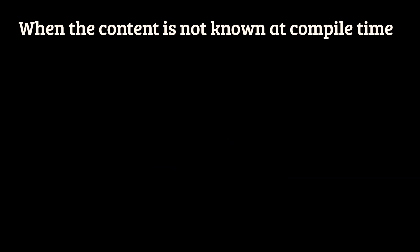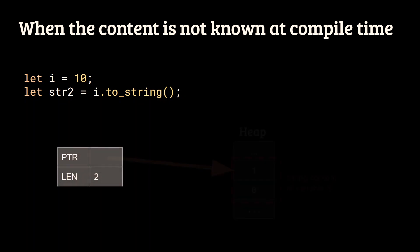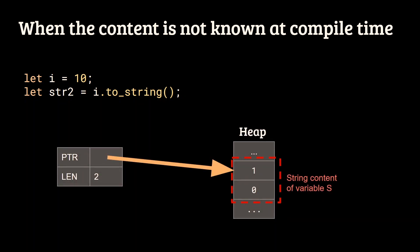On the other hand, this is not the case if you write the following code. In this case, we take an integer i equals 10, and then we convert it to a string. In this case, the string content is not known at compile time, so we need to do an allocation on the heap, creating the string 10. If we now analyze the type of the two previous variables, we notice that string 1 is of type string slice and string 2 is of type string. This is because the first string does not allocate any memory on the heap, whereas the second one does.